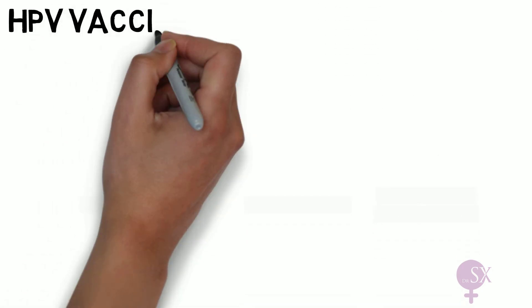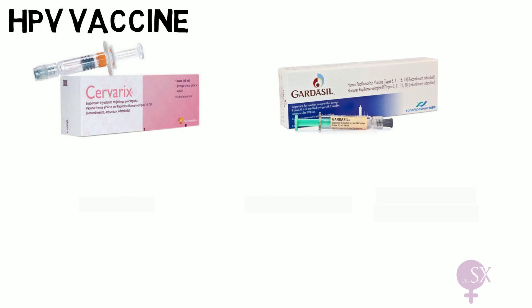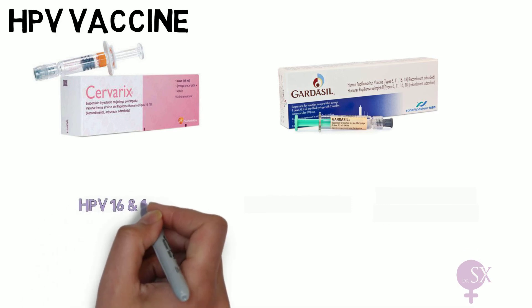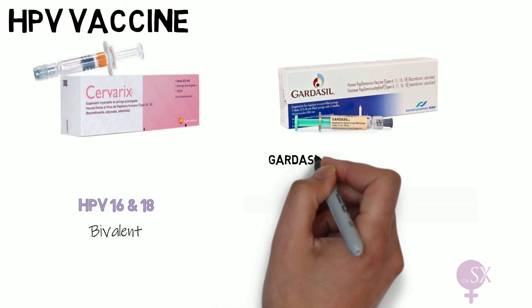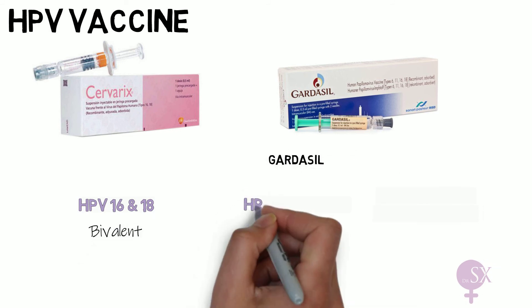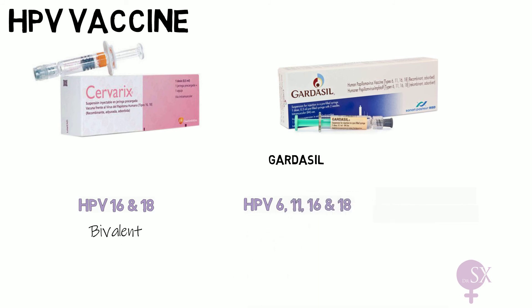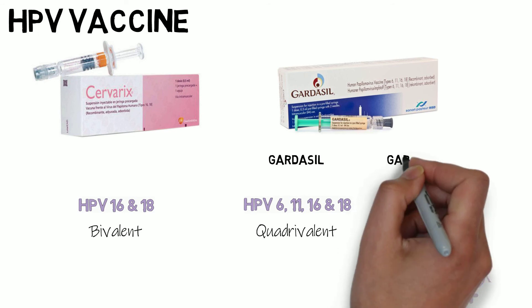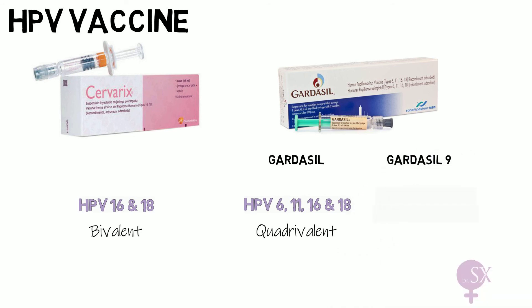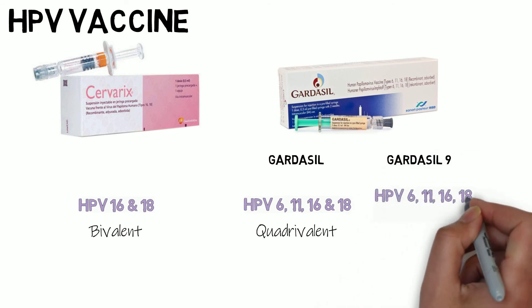A note about the HPV vaccine. We will be discussing Cervarix and Gardasil. Cervarix covers two HPV types — HPV 16 and 18 — and therefore it is bivalent. Gardasil originally covered four HPV types: 6, 11, 16, and 18, making it quadrivalent. They then developed the Gardasil 9 vaccine which covers for nine HPV types.